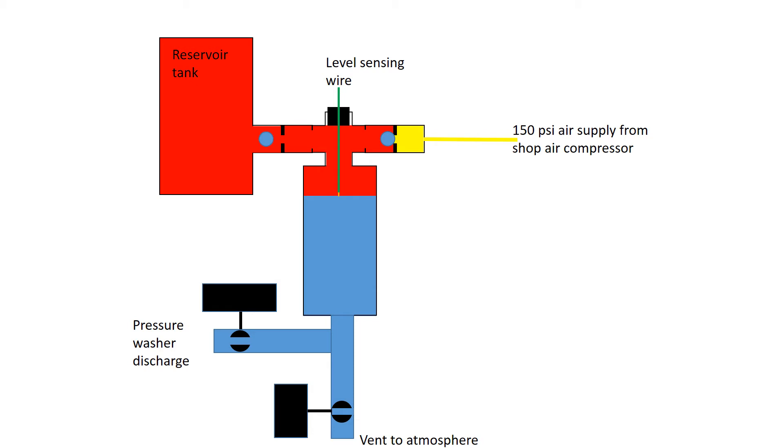Once the water level reaches the level sensing wire, the pressure washer discharge valve is closed while the vent to atmosphere valve is opened and the water is pushed out of the pressure chamber by the pressure of the air in there.